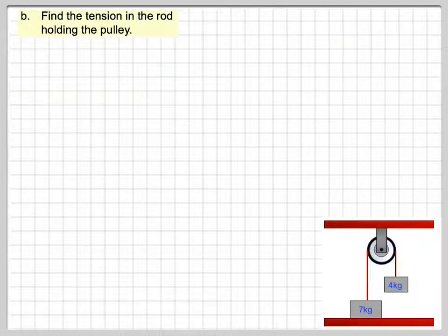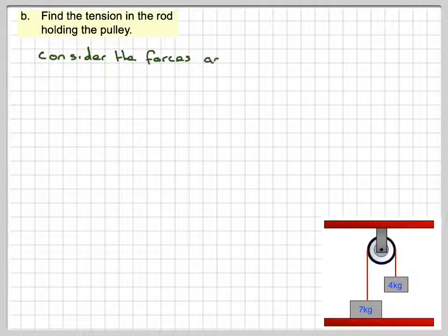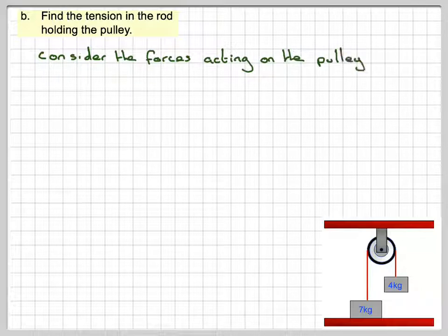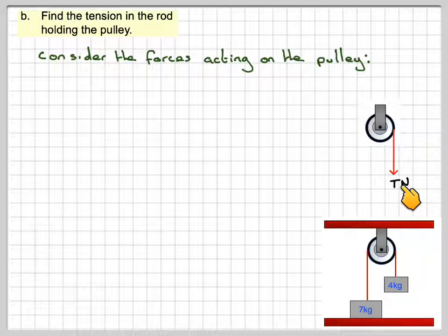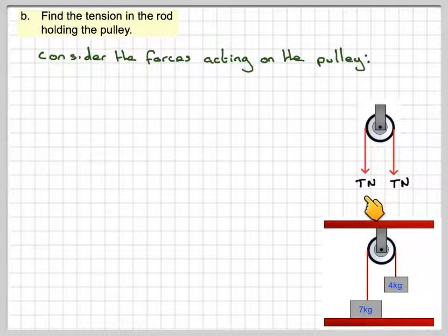Find the tension in the rod holding the pulley, so we've got to find the tension here. So if we now consider the forces acting on the pulley, we've got T newtons acting downwards here, T newtons acting downwards here,